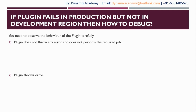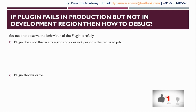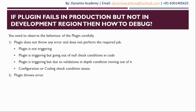We will step through the different situations where a plugin fails on production in both cases and look at the possible corrective actions. When the plugin is not throwing an error and not performing its required job, one possible cause is that the plugin itself is not triggering. If the plugin is not triggering, that means it is not performing its job, so we need to identify why it's not triggering.